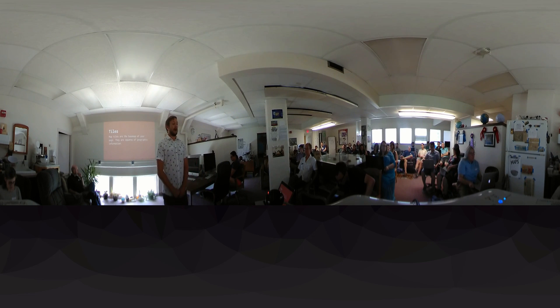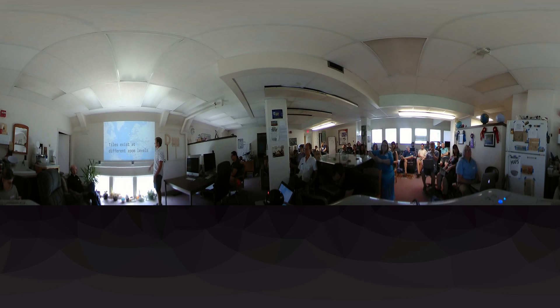Map tiles are the base map of your map. They contain a bunch of different information — label placements, road networks, water features, whatever you need to put into them. They're literally just squares of geographic information. Tiles exist at different zoom levels, and as you zoom in, your map needs to pick up different information as it gets closer and closer to the earth.